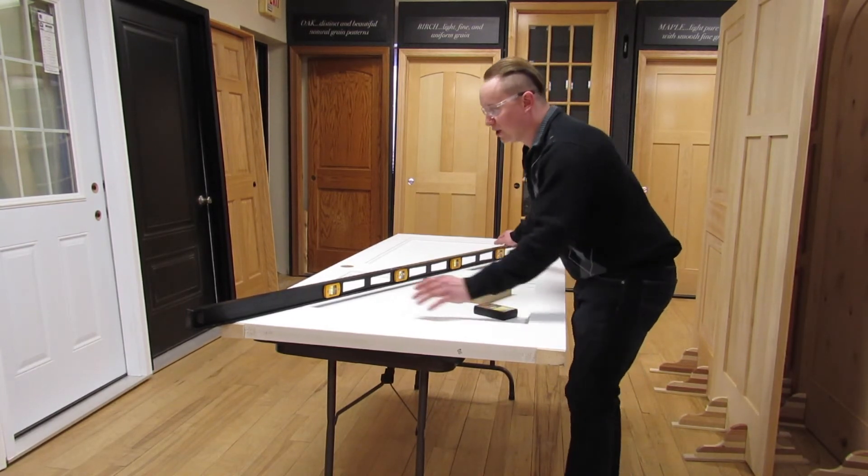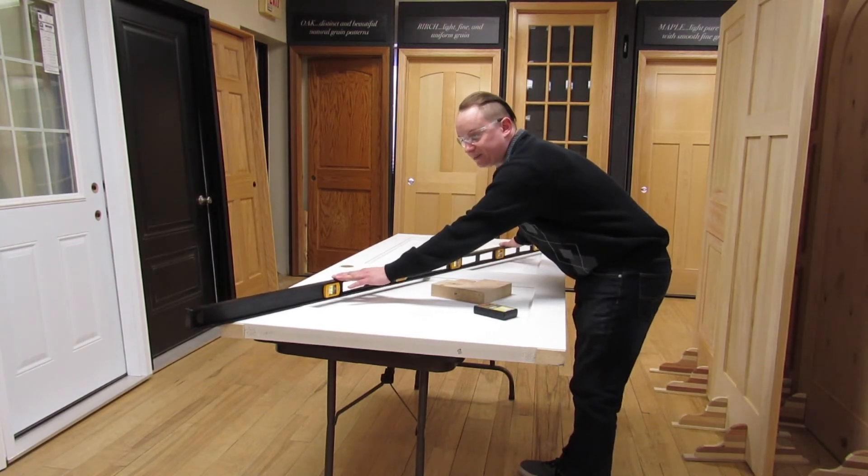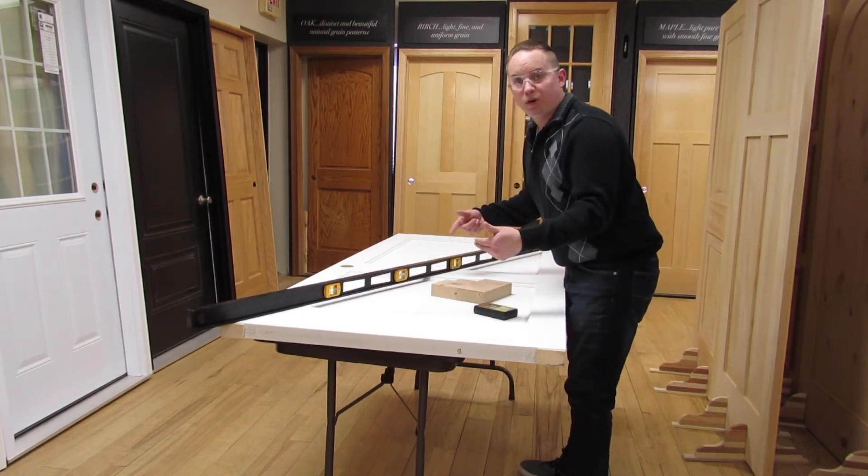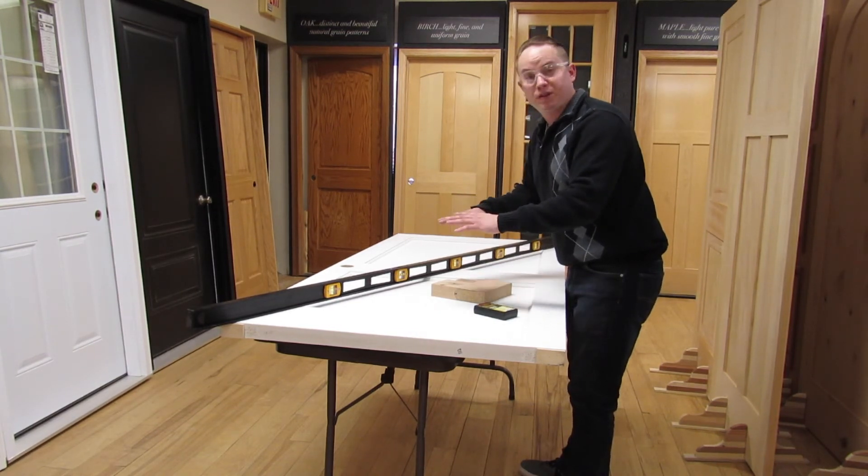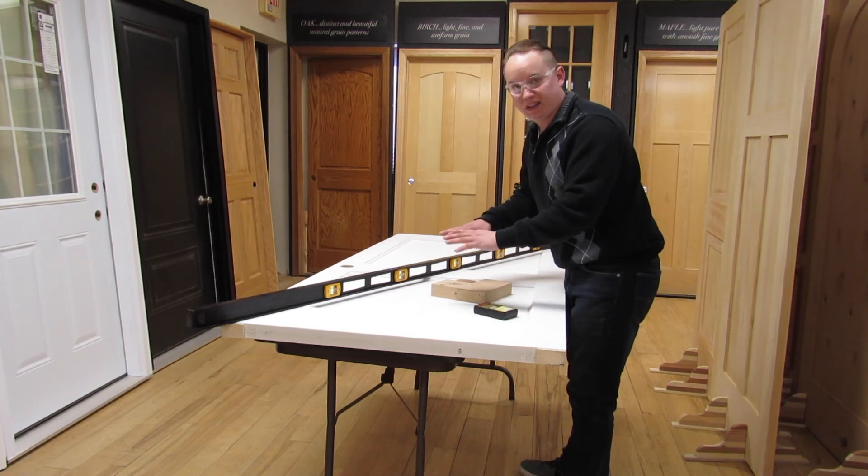The other thing we can do is since we notice that the arch is on this side, we can flip the door over and put a distributed weight across it for an extended period of time to help straighten the rest of that back out.